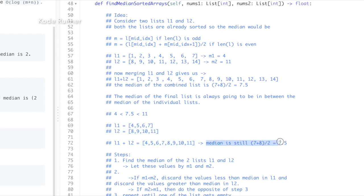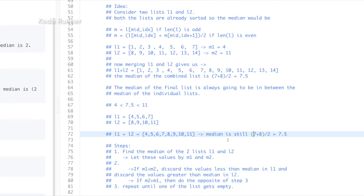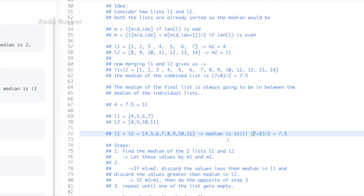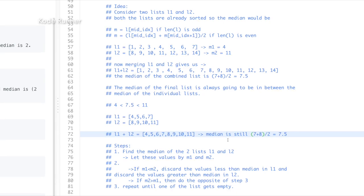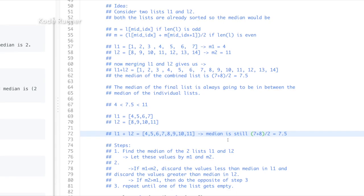Look at the following line. Here we have stripped our arrays and still, the median is same as it was before. This means that at each step, there is possibility to discard half of the input numbers just by looking at the median of the two arrays.